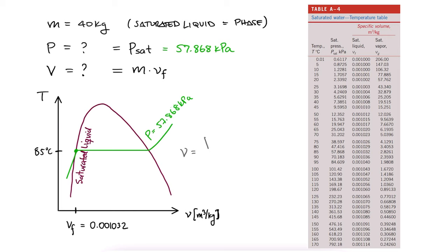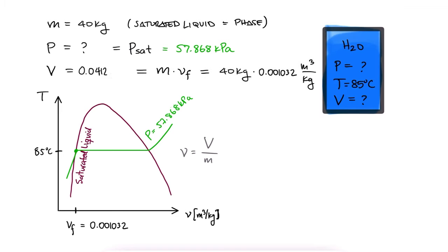Since the specific volume is volume over mass, then volume, which is what we're looking for, is mass times specific volume, or 0.04128 cubic meters.